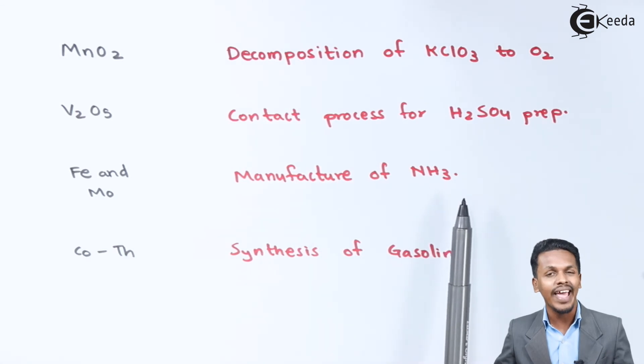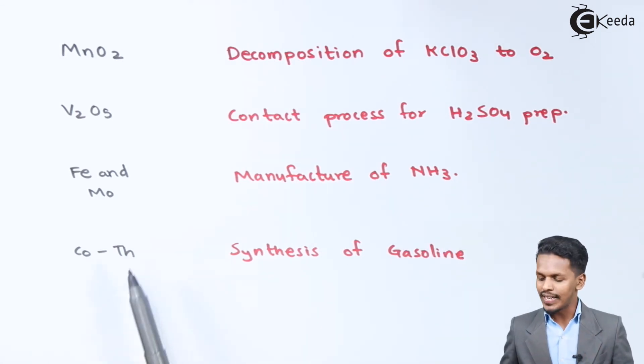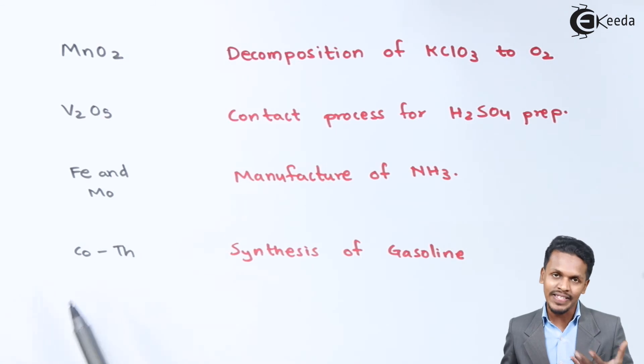Cobalt and thallium - this alloy is used in the synthesis of gasoline by Fischer's process.